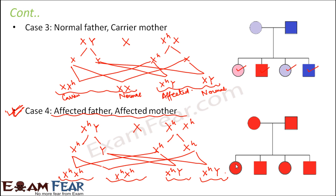Pedigree charts can actually help find out how the next generations would be affected. Here we have taken small examples, but if you try to prepare a chart for an entire family spanning five or six generations, maintaining it manually is very difficult. With a proper systematic representation, it becomes very easy to understand and analyze.